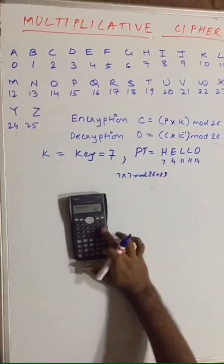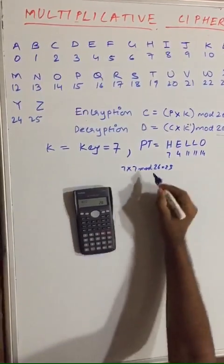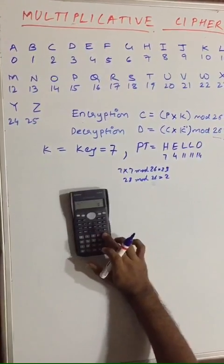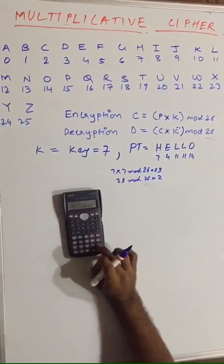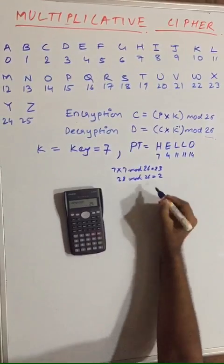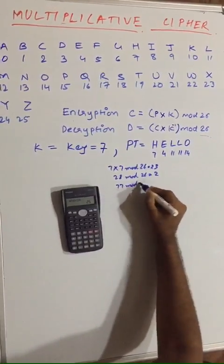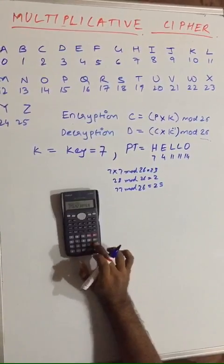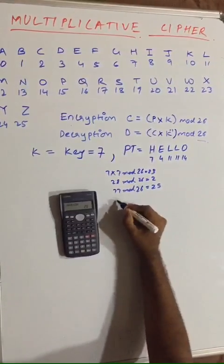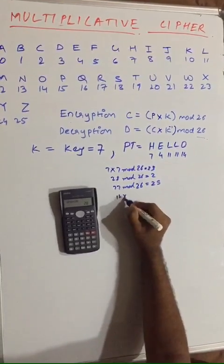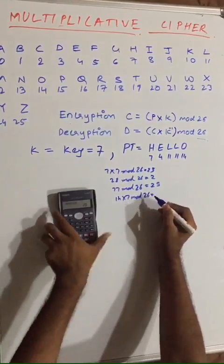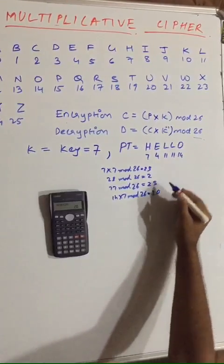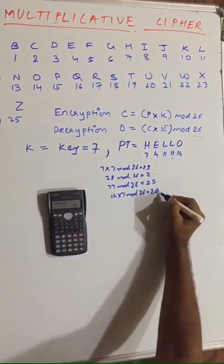For E=4: 4 × 7 = 28, and 28 mod 26 = 2. For L=11: 11 × 7 = 77, and 77 mod 26 = 25. For O=14: 14 × 7 mod 26 = 98 − 3×26 = 20. So applying the encryption algorithm on all four values, we get 23, 2, 25, 25, and 20.